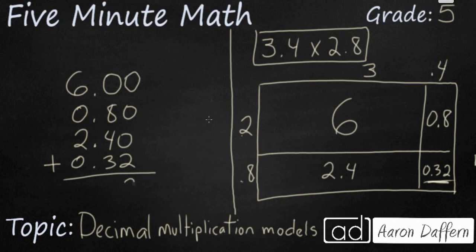And if we add this up, it's pretty simple. We're going to get 9 and 52 hundredths. So that is our answer of 3 and 4 tenths times 2 and 8 tenths.